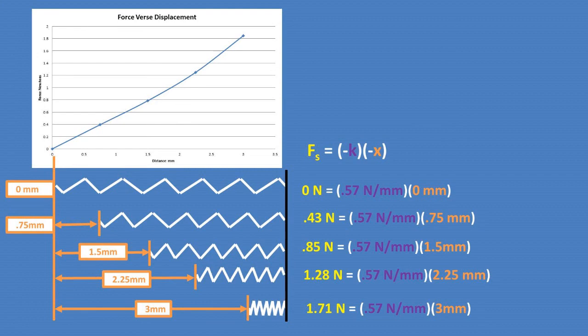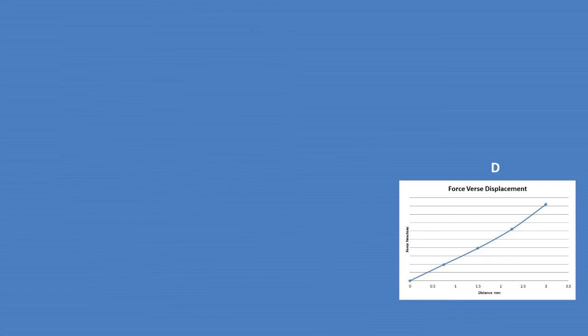The equation for Hooke's law is the same as a linear equation for a graph. If you picked graph D, you were correct.